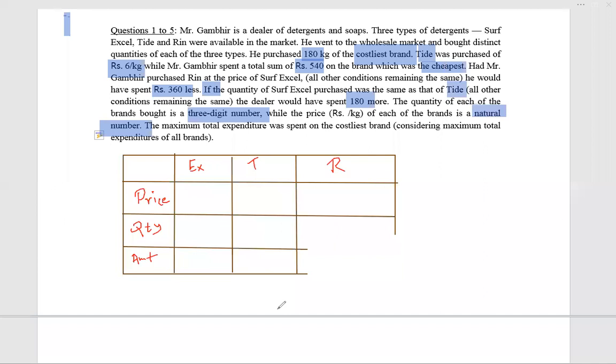As you can see, I have made a table with Surf Excel, Tide, and Rin. Initially, most of the data I cannot express, but Tide was purchased at the rate of 6. So let's say the price of Surf Excel is e and price of Rin is r. The quantity purchased is x, y, and z.